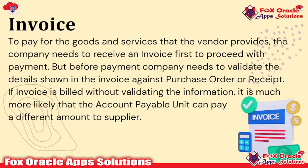Once the GRN is created, the next step is to create the invoice for the items. To pay for the goods and services the vendor provides, the company needs to receive an invoice first to process the payment. The invoice is received from the supplier side. Before payment, the company needs to validate the details shown in the invoice against the purchase order. If the invoice is paid without validating the information, it is much more likely that the accounts payable unit will pay a different amount to the supplier.